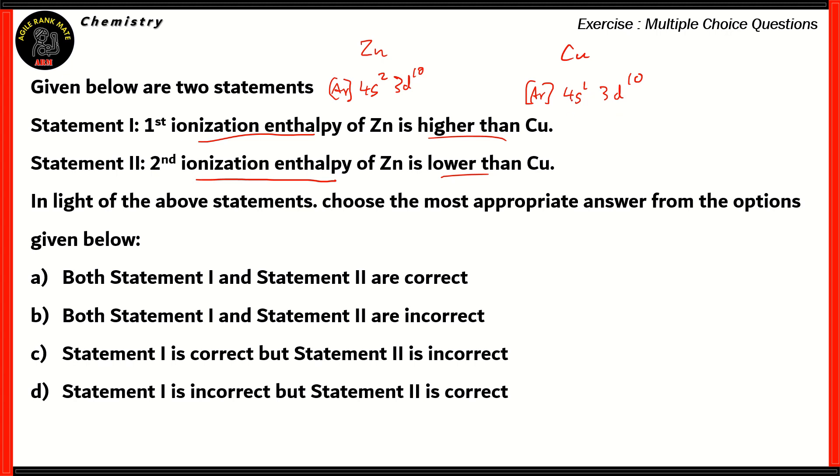Now, for copper, it's 4s1. And since the s orbital only takes two electrons maximum, so if you have one electron, then it's easier to take it out as well. So, the first ionization enthalpy of copper is actually lower. So, therefore, statement one is true.